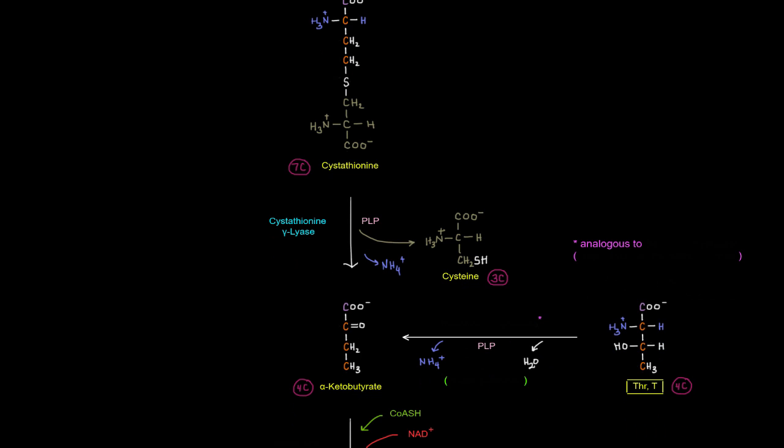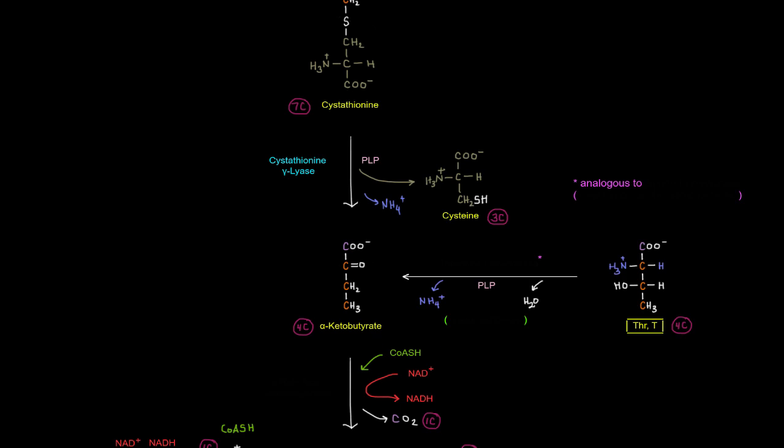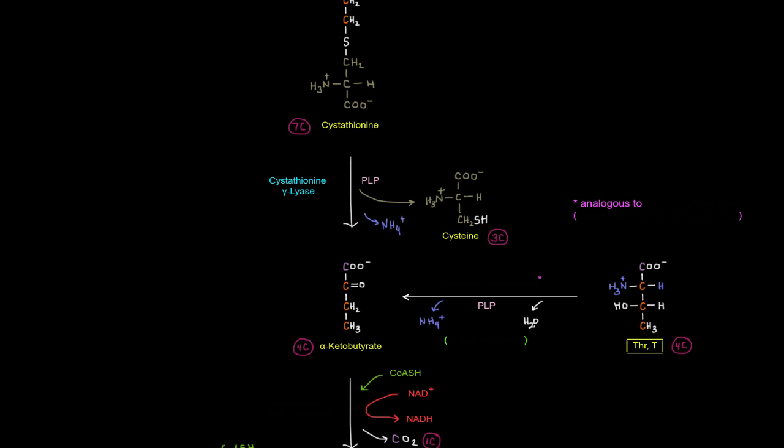Okay. And we can get this alpha keto butyrate also from threonine. Okay. And this is actually the major pathway by which threonine is degraded. And going from threonine to alpha keto butyrate, we're going to remove the amino group as well as the HOH as we're going to lose water.